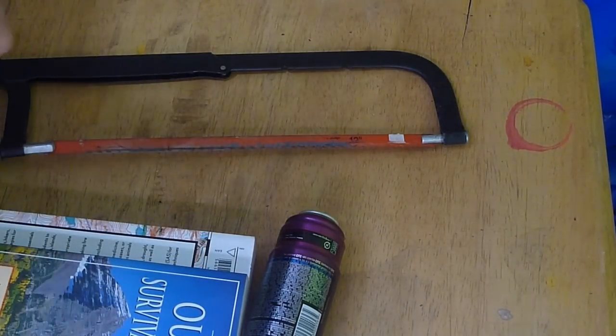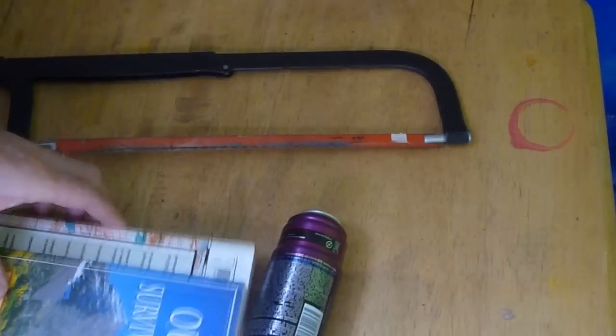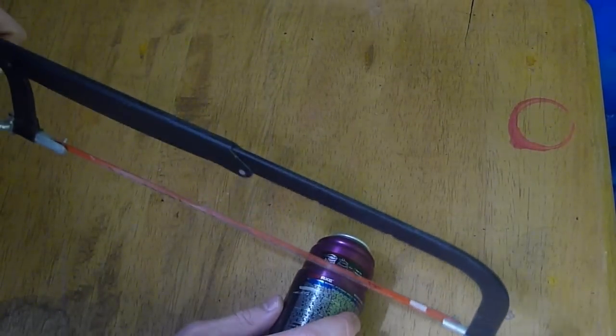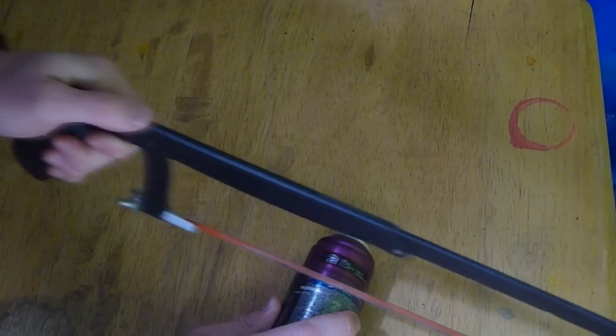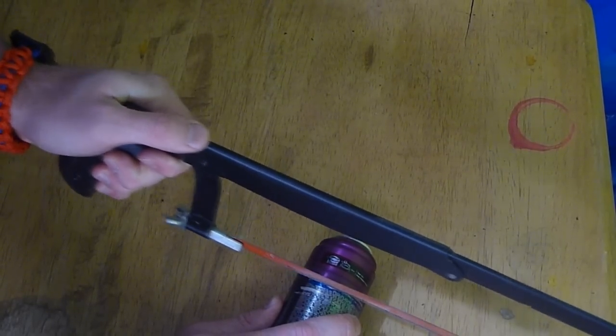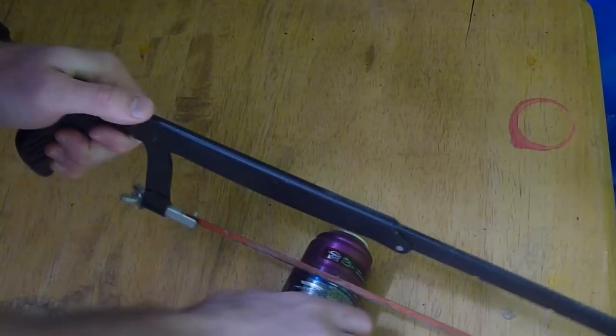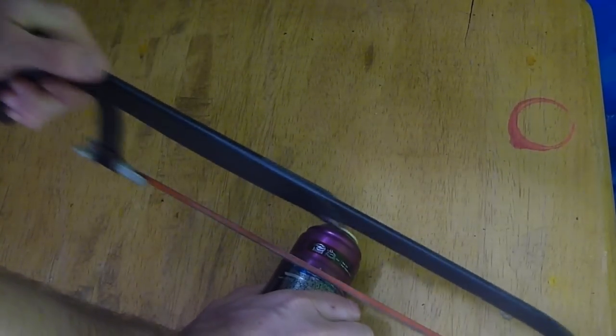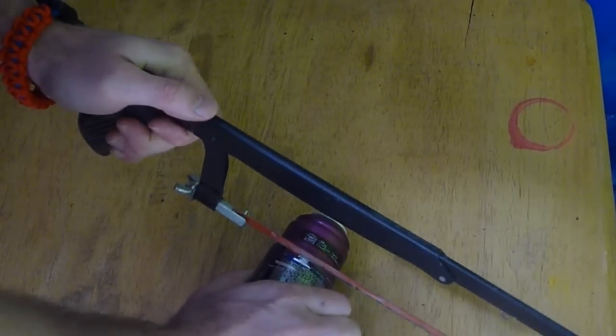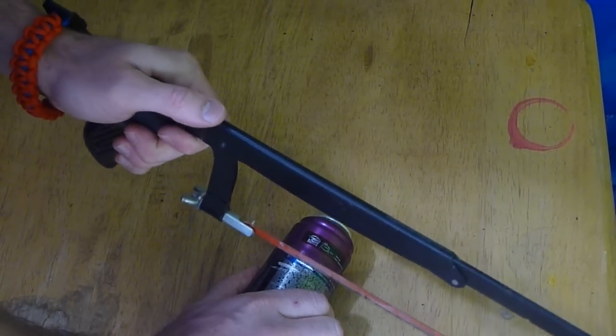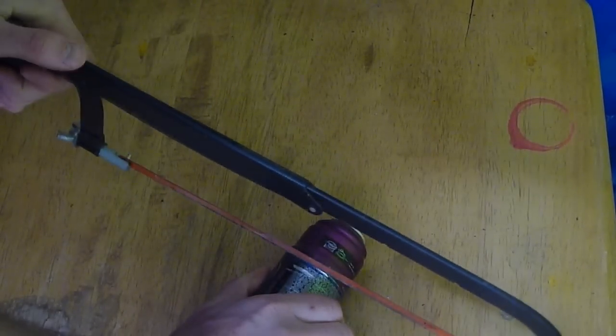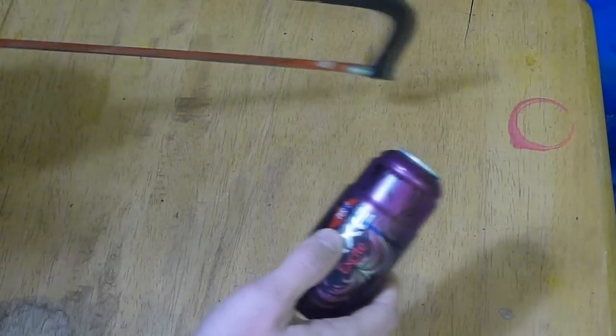And my next job is going to be, if you've got a vice it can help, but I'm going to cut along this line. Now the aluminum is much thicker on these Axe cans than it is on your pop can, obviously. So a pair of scissors isn't going to cut it, literally. So I'm just going to work on that and we're going to cut and we're going to use that guide line along the side here.